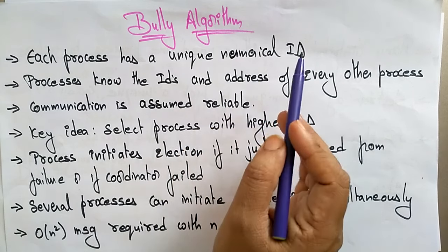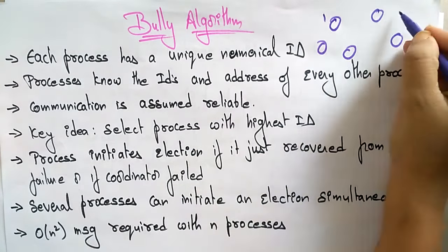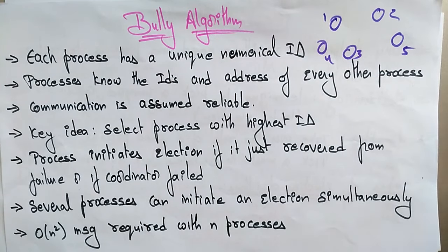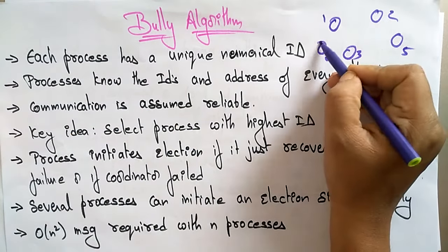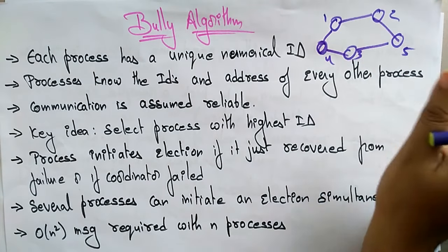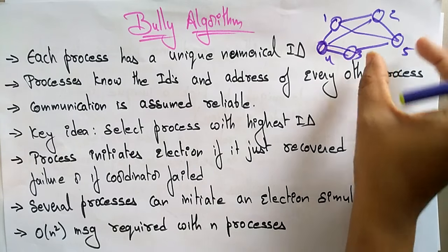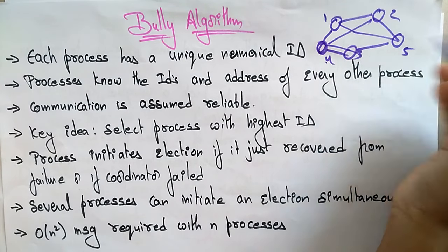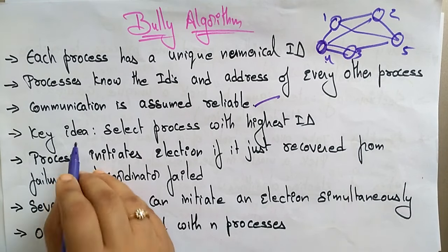In the bully algorithm, each process has a unique numerical ID — for example, 1, 2, 3, 4, 5. The goal is to elect one process as a coordinator. Each process knows the IDs and addresses of every other process. Communication is assumed to be reliable.